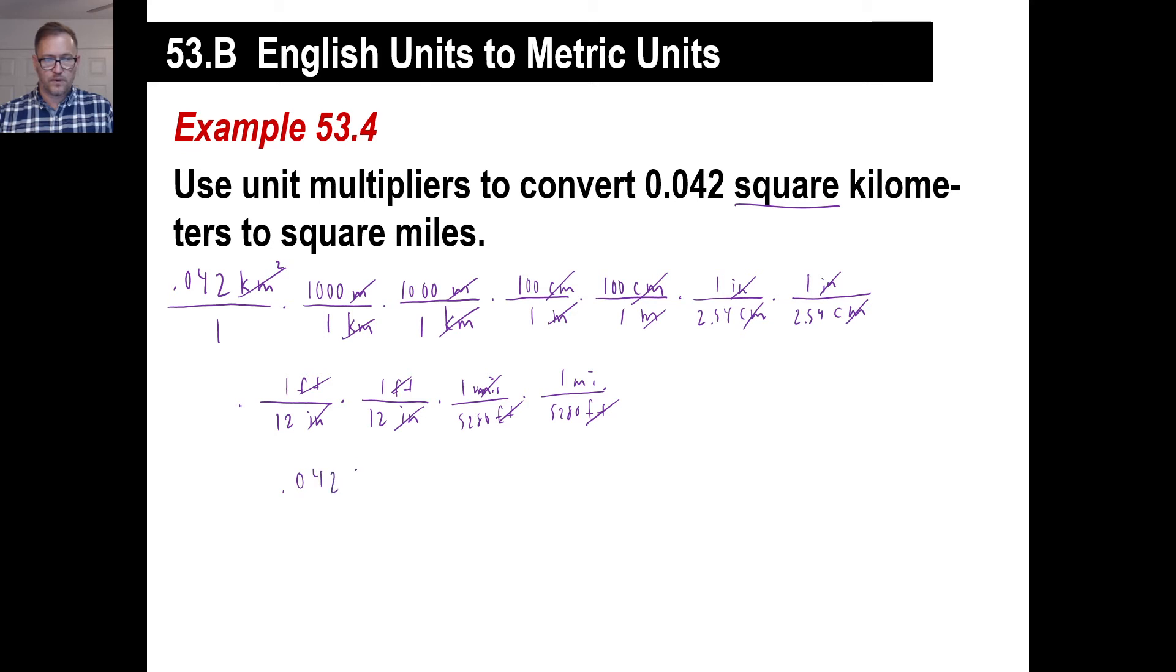0.042 times a thousand squared times a hundred squared. That's all there is on top except for ones. Over 2.54 squared. Over 12 squared. Over 5,280 squared. Gee whiz. And that's square miles. That ought to be a lot of fun to run through your calculator. That's just about the worse you're going to see on these types going from English to metric. So just again, write what you're given and just keep going until you can't go anymore.